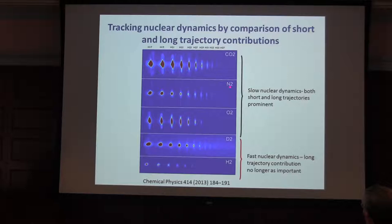Without going into technical details, on axis is the short trajectory emission, off axis is the long trajectory emission. We see very strong long trajectory emission in CO2, N2 and O2. These are molecules with very little nuclear dynamics. But when we get down to D2 and H2 where there's rapid nuclear dynamics, particularly in H2, the protons move fast, we see no long trajectories at all.